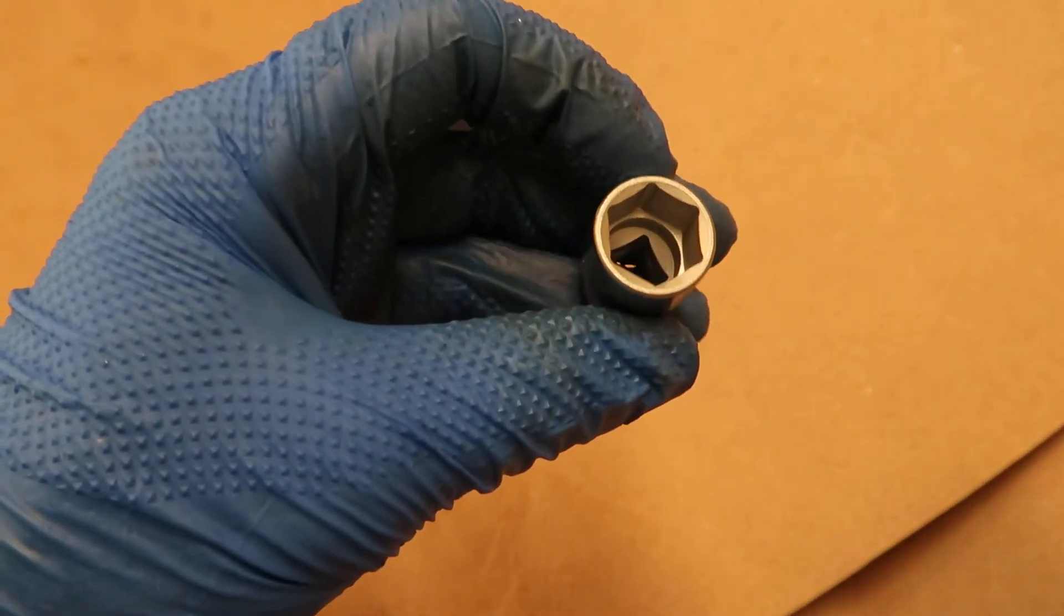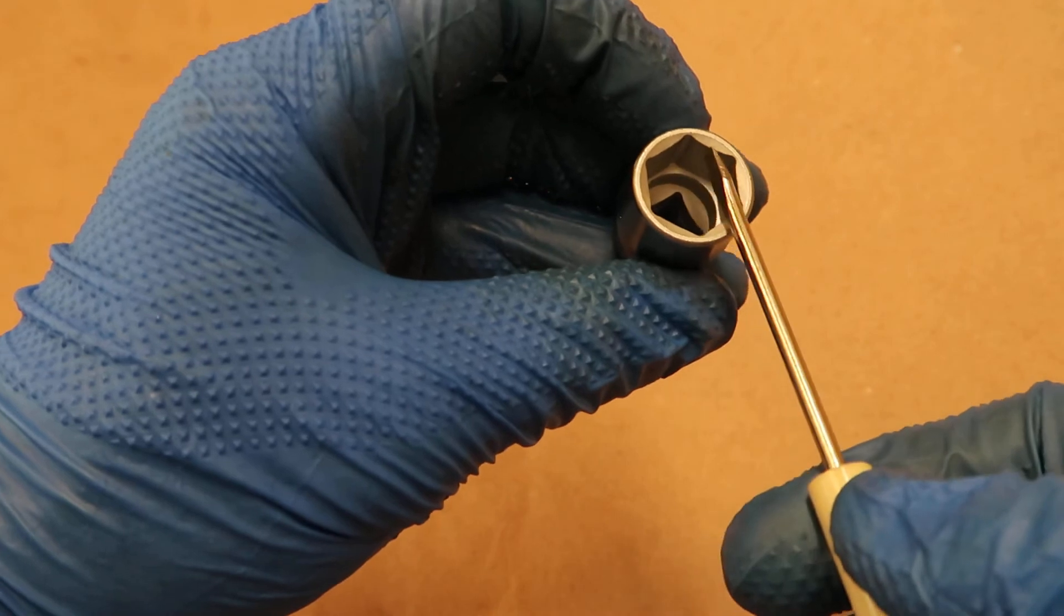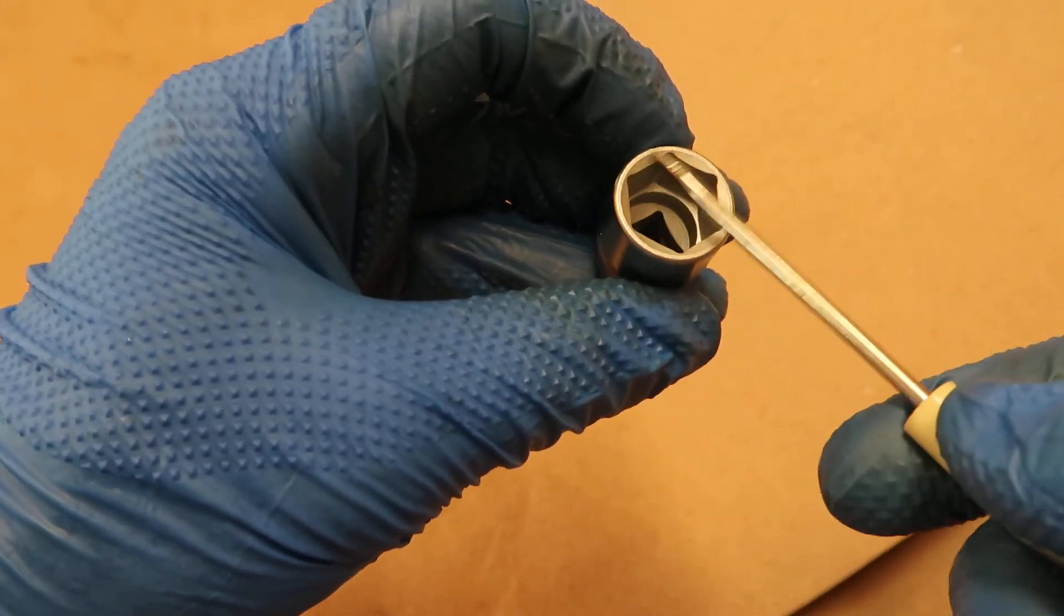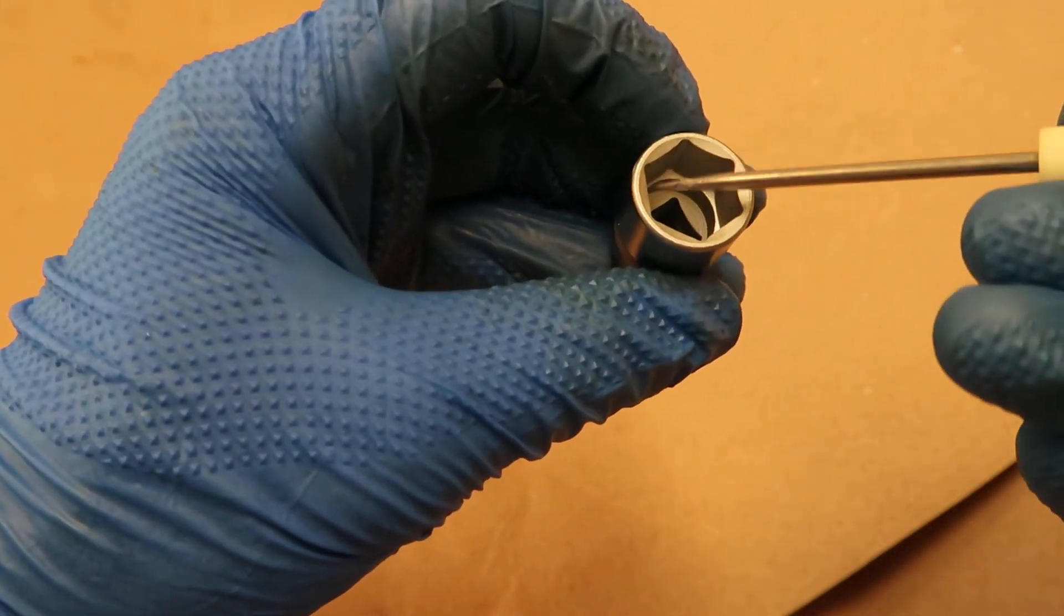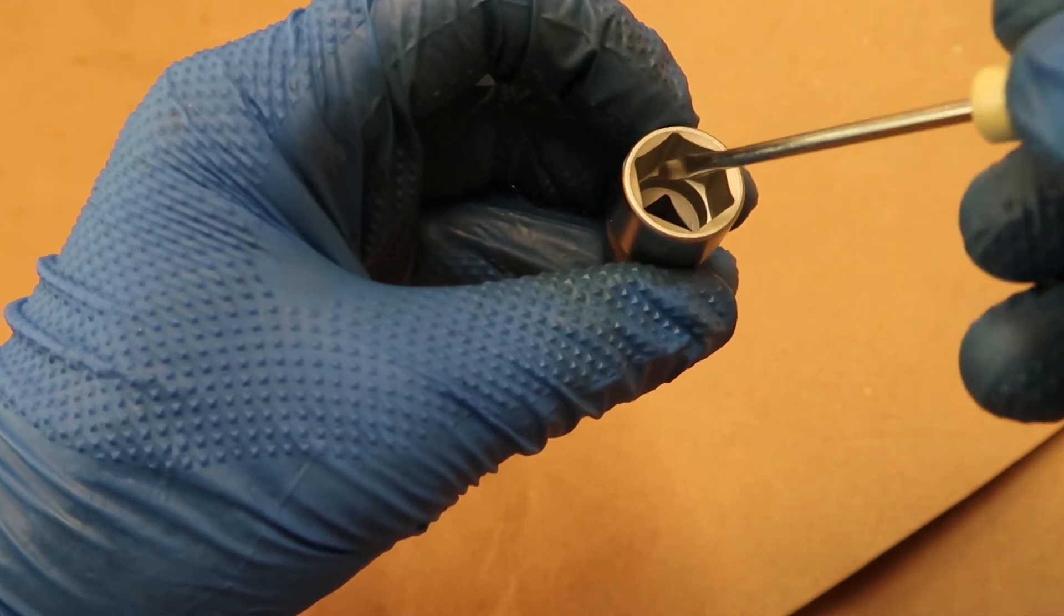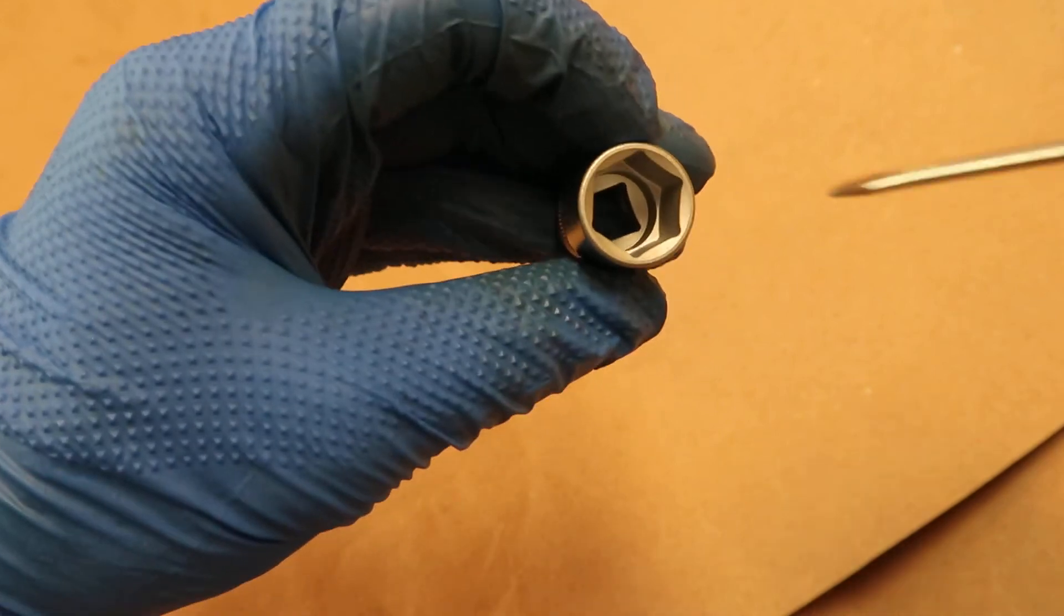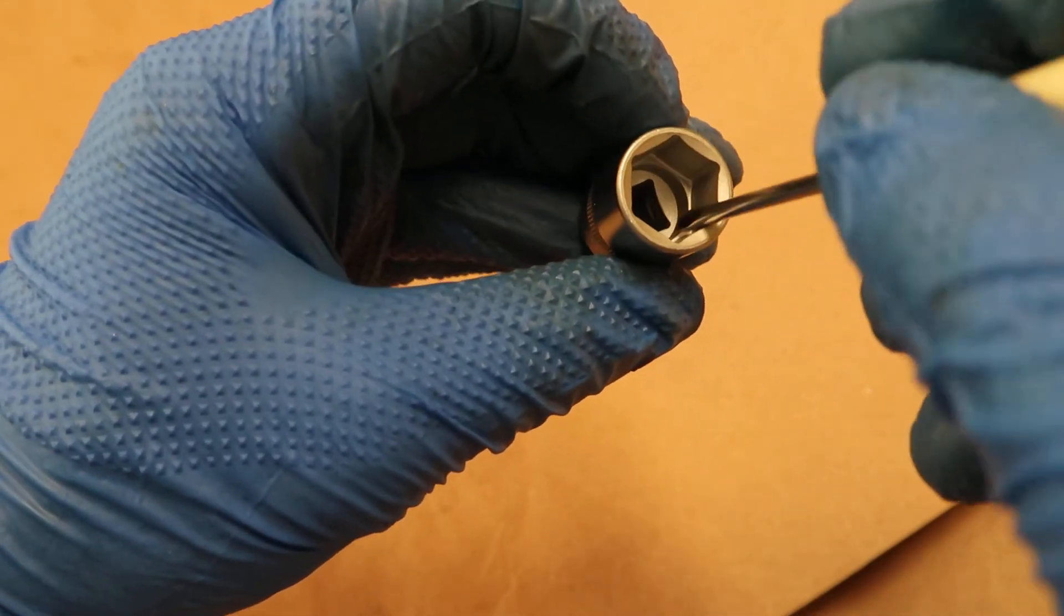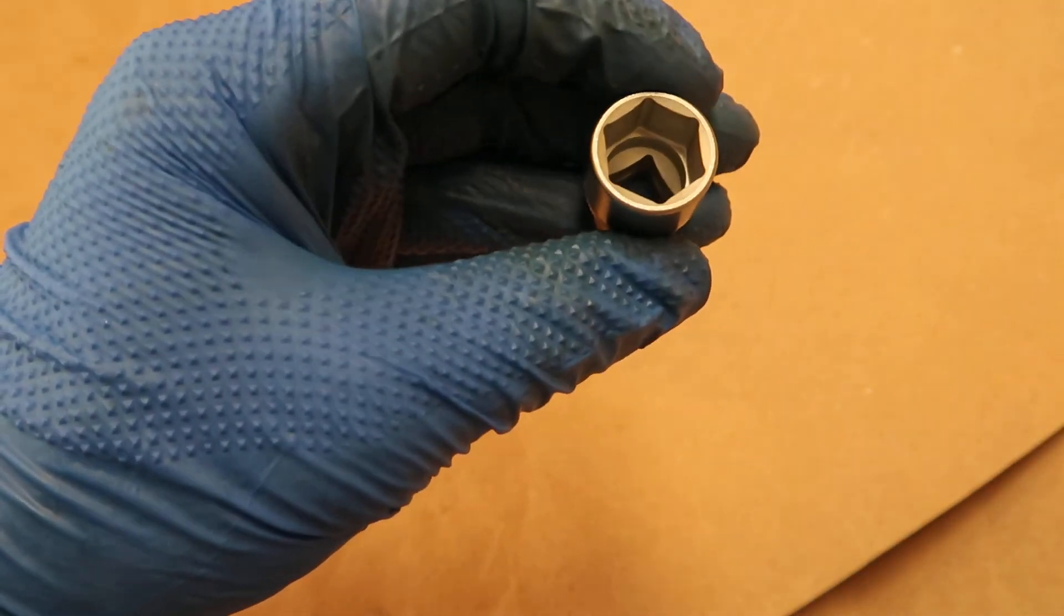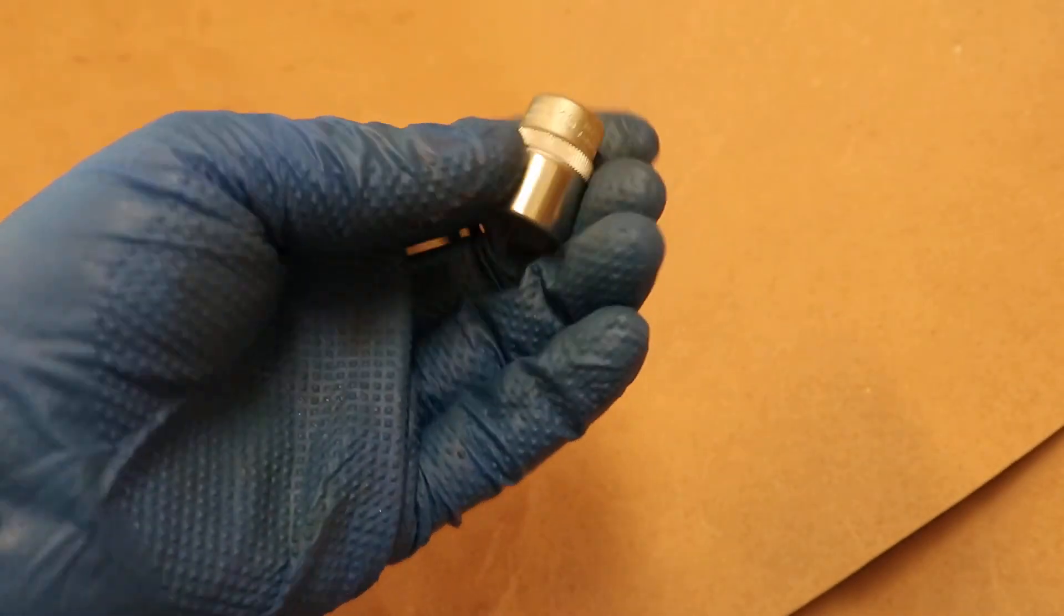You can see that there's a little rounded area inside. According to their literature, this is to prevent rounding of hex bolts. Interesting concept and I think it does work. Very nicely made.